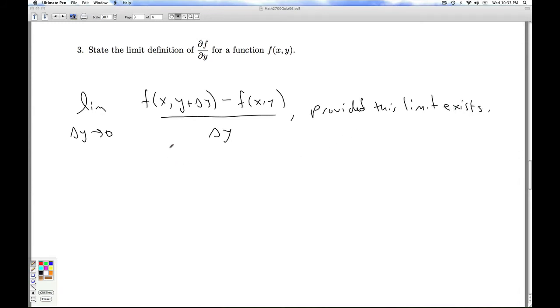Now once again you can memorize this on a note card or you can remember this is the same concept of derivative we had in calc one. The partial derivative of f with respect to y is the instantaneous rate of change of the function with respect to y. So I have a function of two variables. I'm only looking at the rate of change with respect to y. So I keep the x constant. The x isn't changing. How is the y changing?